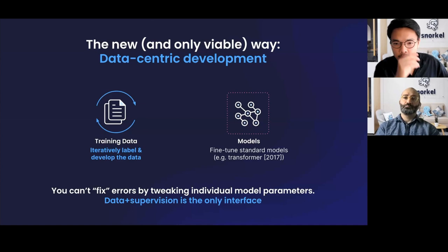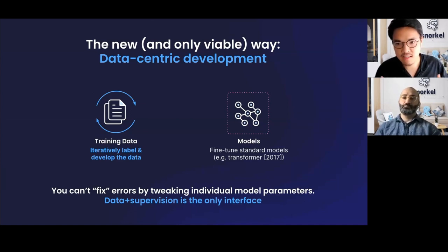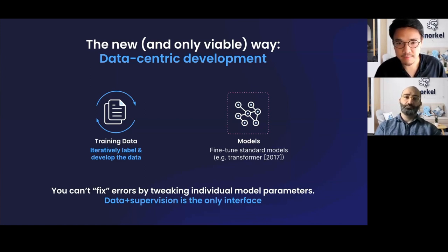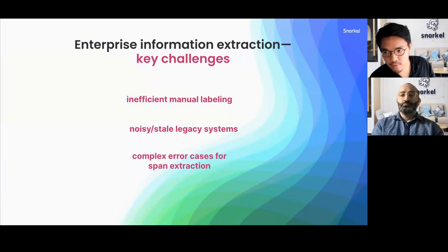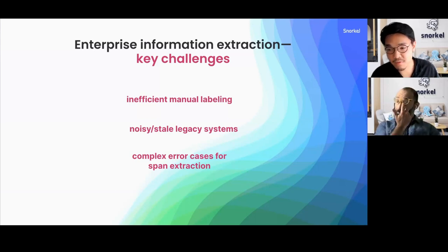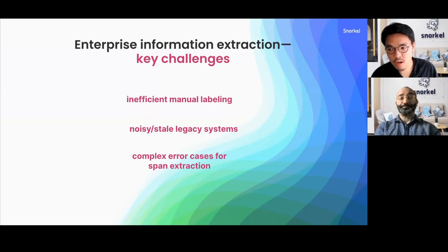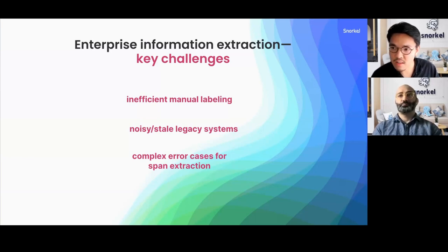Now that we've framed this high-level approach, I'll share a few of the specific ways that we see data scientists and ML practitioners get stuck when building these AI systems. The challenges are threefold: it starts with inefficient manual labeling; it proceeds into the fact that a lot of organizations have noisy and stale legacy systems that are hard to leverage and update; and finally, for span extraction problems specifically, error modes can be really complex and nuanced, and it can be really challenging to correct the types of errors that you'll see.